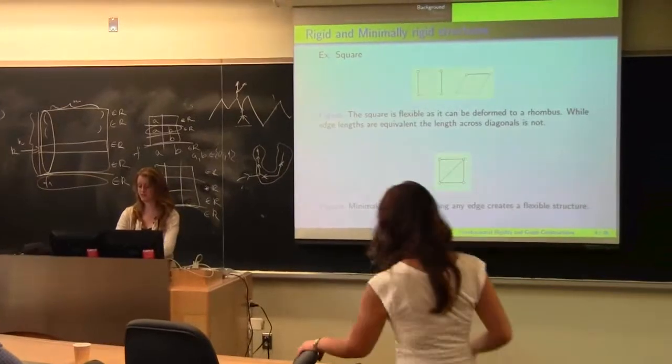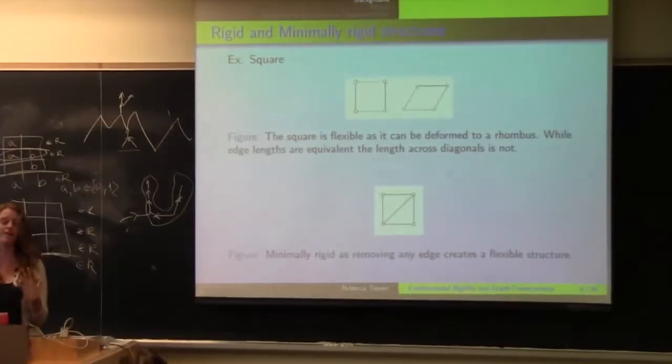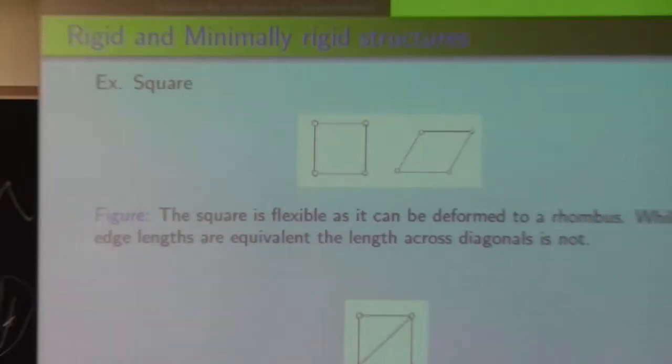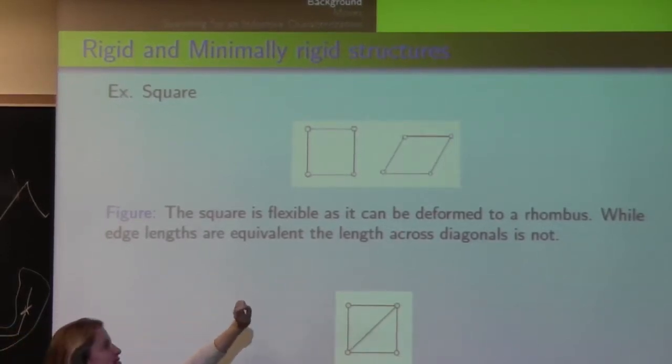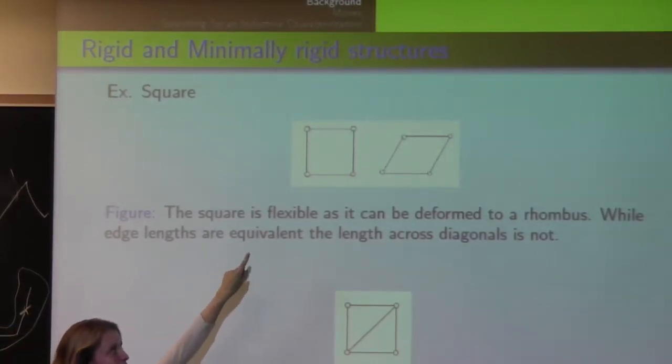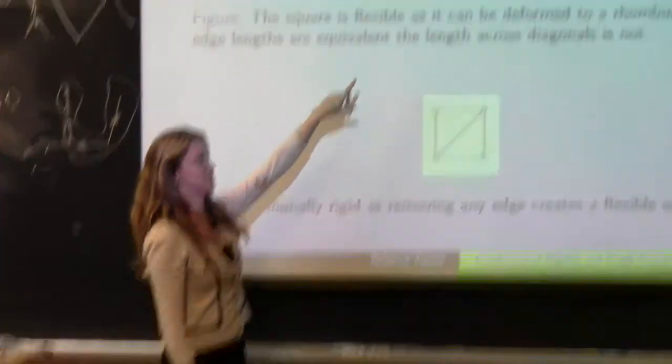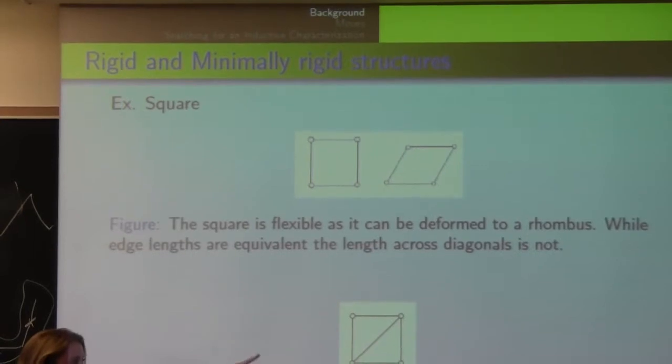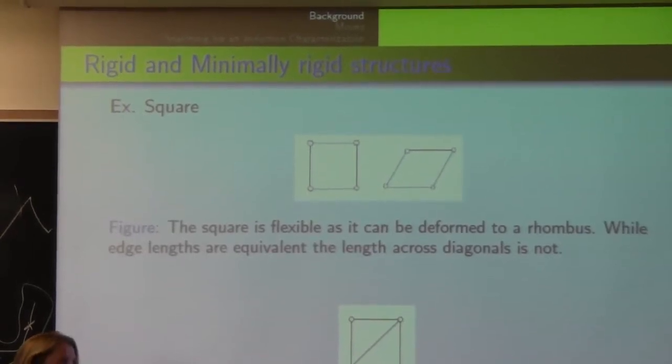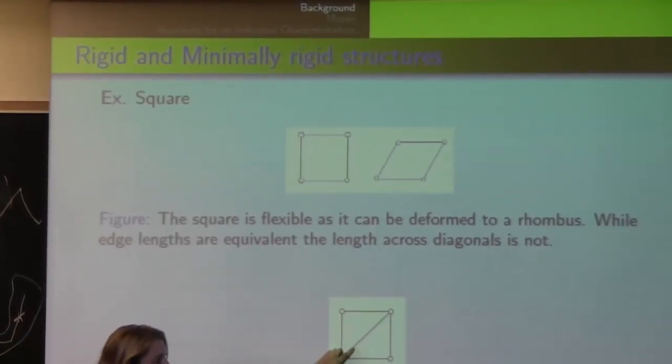So another example is if we look at a square. So a square, all the edge lengths stay the same, but you can deform it into a rhombus, such that the diagonal length between the vertices is different while the edge lengths are staying the same. However, if you take a square and you add an edge along the diagonal, this is a rigid structure.